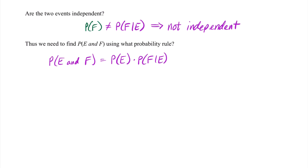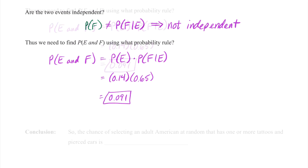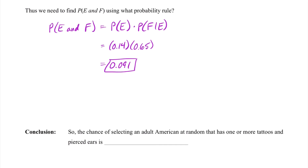From the problem, P(E) is 14% and P(F|E) is 65%. Multiplying those, we get 0.091. So the chance of selecting an adult American at random who has one or more tattoos and pierced ears is 9.1%.